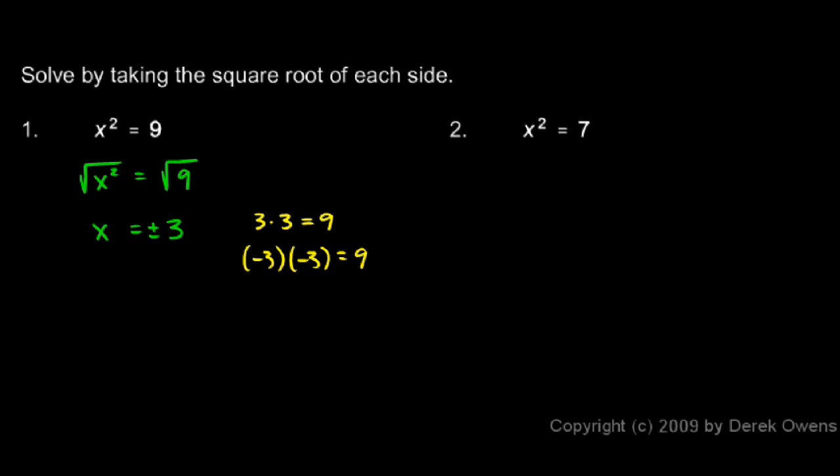In example number 2, x squared equals 7. So we'll just take the square root of each side. And the square root of x squared will give me simply x. And the square root of 7, don't forget the plus or minus. So x is equal to plus or minus the square root of 7. And that's my answer.